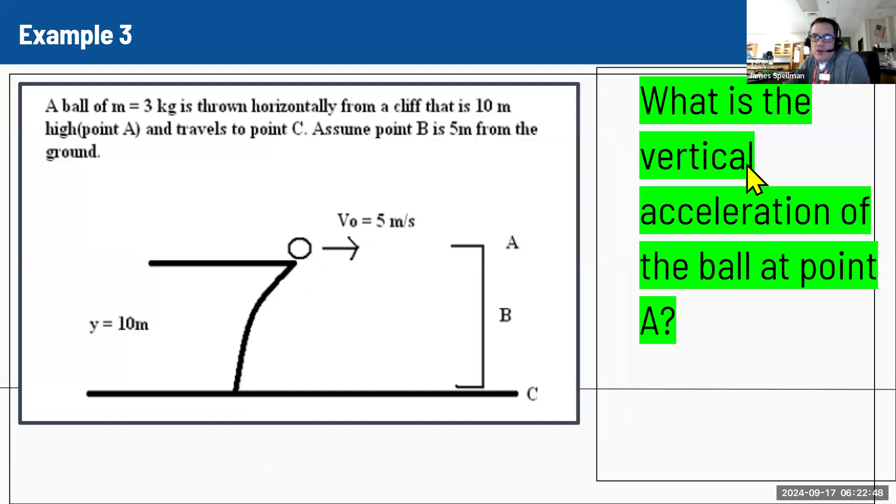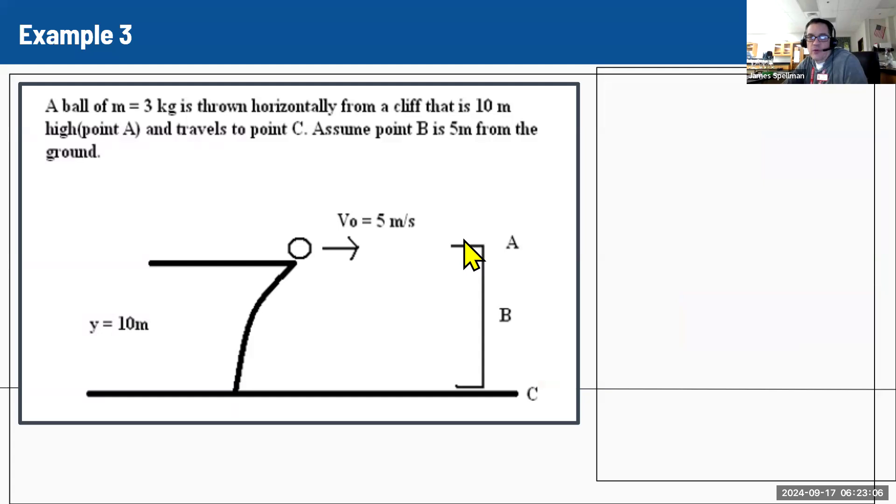We have some more questions. What is the vertical acceleration of the ball at point A? This is not really a trick question, but it doesn't involve math because in the vertical direction, the acceleration is always going to be due to gravity. It's always going to be negative 9.8 or negative 10 in this case, which is what we just assumed. There's no math to do on that one. That's just a fact.